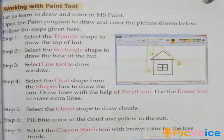Working with paint tool: let us learn to draw and color in MS Paint. Open the paint program and follow the steps to draw the picture shown. Step 1, select the triangle shape to draw the top of the house. Step 2, select the rectangle shape to draw the base. Step 3, select the line tool to draw the window. Step 4, select the oval shape to draw the sun; draw lines with the pencil tool. Use the eraser tool to erase extra lines. Step 5, select the cloud shape to draw clouds. Step 6, fill blue color in the cloud and yellow in the sun.